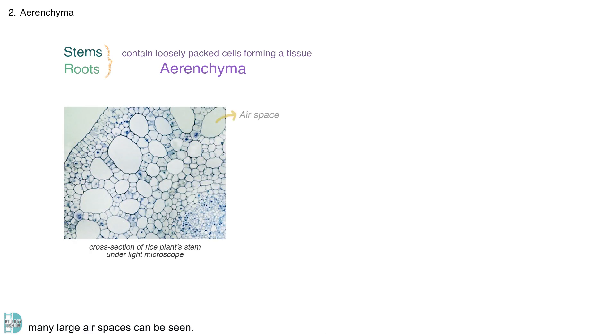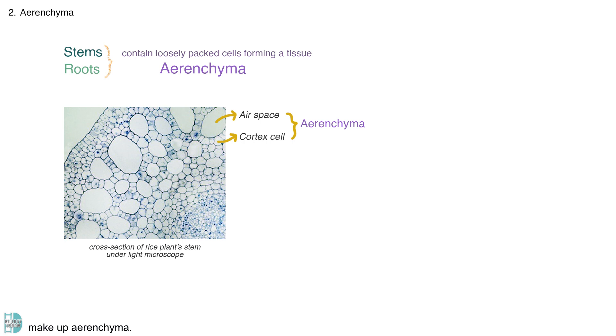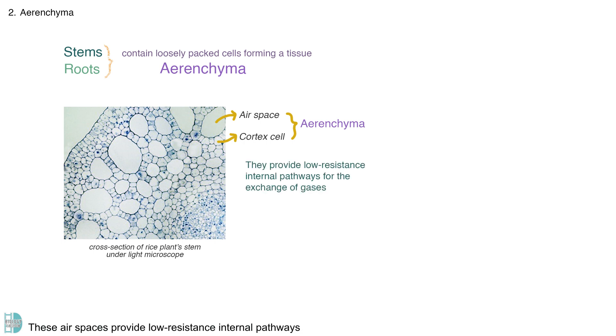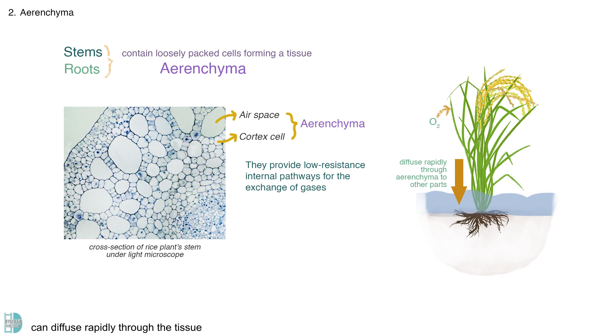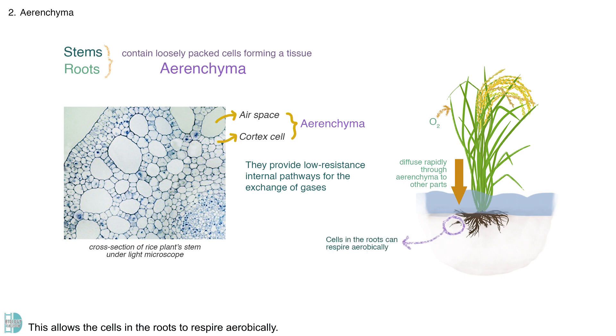Adaptation 2: Aerenchyma. The stems and roots of the rice plants contain loosely packed cells, forming a tissue known as the aerenchyma. When you view the cross-section of a stem under the microscope, many large airspaces can be seen. The cortex cells and those airspaces in the layer make up aerenchyma. These airspaces provide low-resistance internal pathways for the exchange of gases. Oxygen molecules that enter via stomata near the leaves can diffuse rapidly through the tissue to other parts of the plants, including those under water.